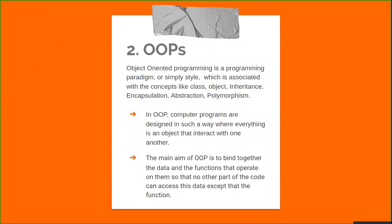So here comes the first domain: OOP. OOP, as we all know, stands for Object-Oriented Programming. It is a programming paradigm, or maybe a style, which is associated with concepts like class, objects, inheritance, encapsulation, abstraction, and polymorphism. In object-oriented programming, computer programs are designed in such a way where everything is an object, and these objects interact with each other. The main aim of OOP is to bind together the data and functions into a single unit so that no other part of the code can access the data except the function where it has been defined. Most popular programming languages like Java, C++, and Ruby follow an object-oriented programming paradigm.